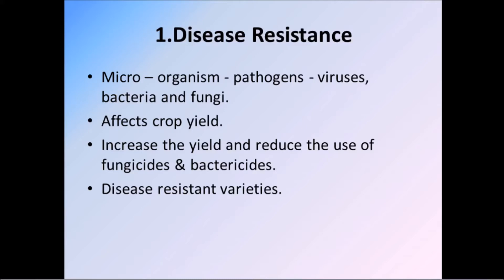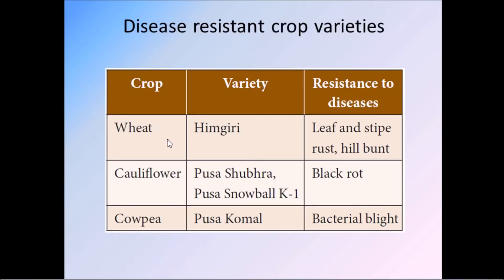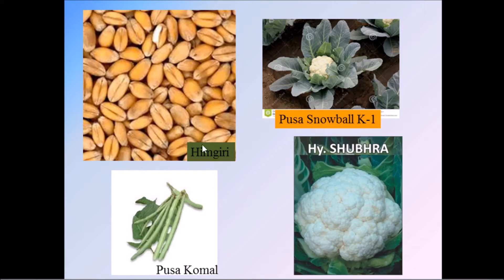Some disease-resistant varieties: wheat variety Himgiri is resistant to leaf and stripe rust and hill bunt. Cauliflower varieties Pusa Shubhra and Pusa Snowball K1 are resistant to black rot disease. Cowpea variety Pusa Komal is resistant to bacterial blight disease. You can see the images here — Himgiri wheat, Pusa Snowball K1, Pusa Shubhra, and Pusa Komal, a pod-type bean variety.